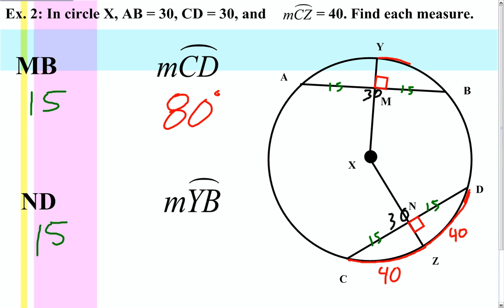Since the chords are congruent, that means their arcs will be congruent. Therefore, that means all pieces of the arcs will also be congruent, which means the measurement of Y to B is also going to be 40 degrees.